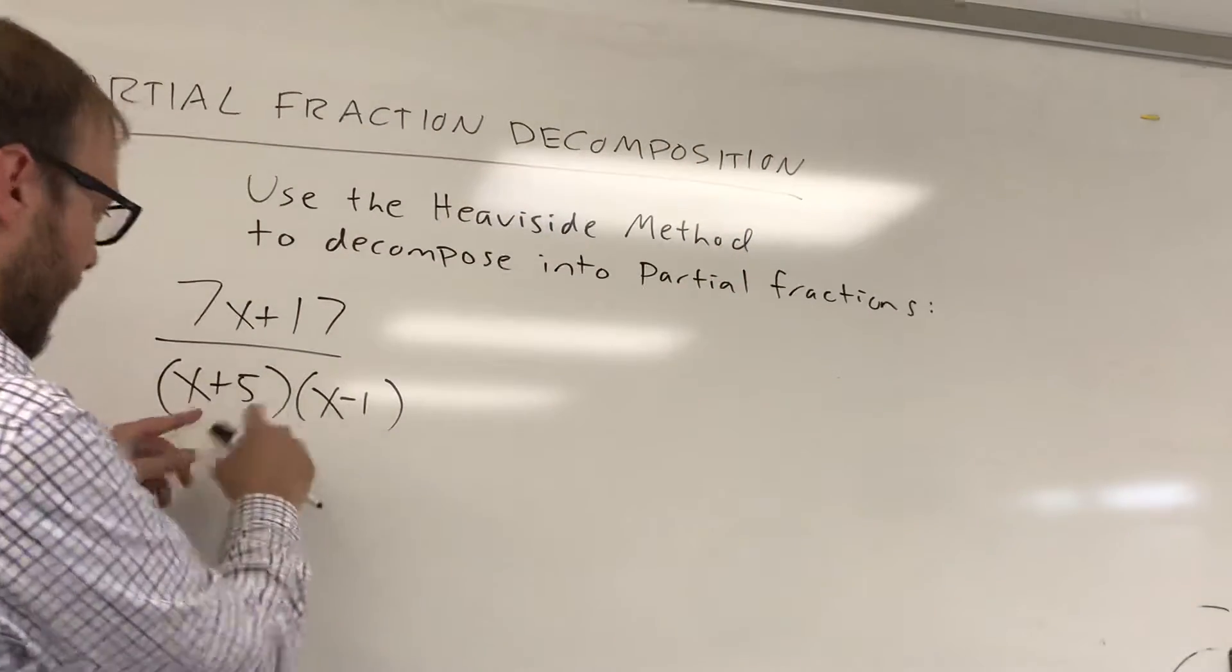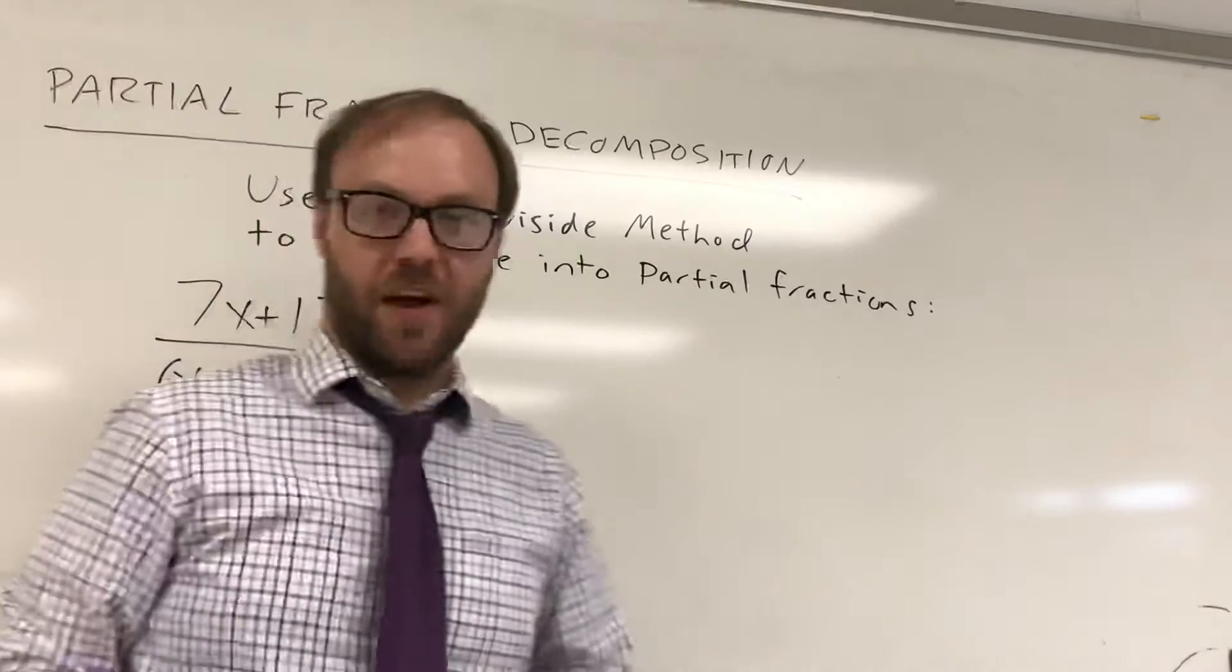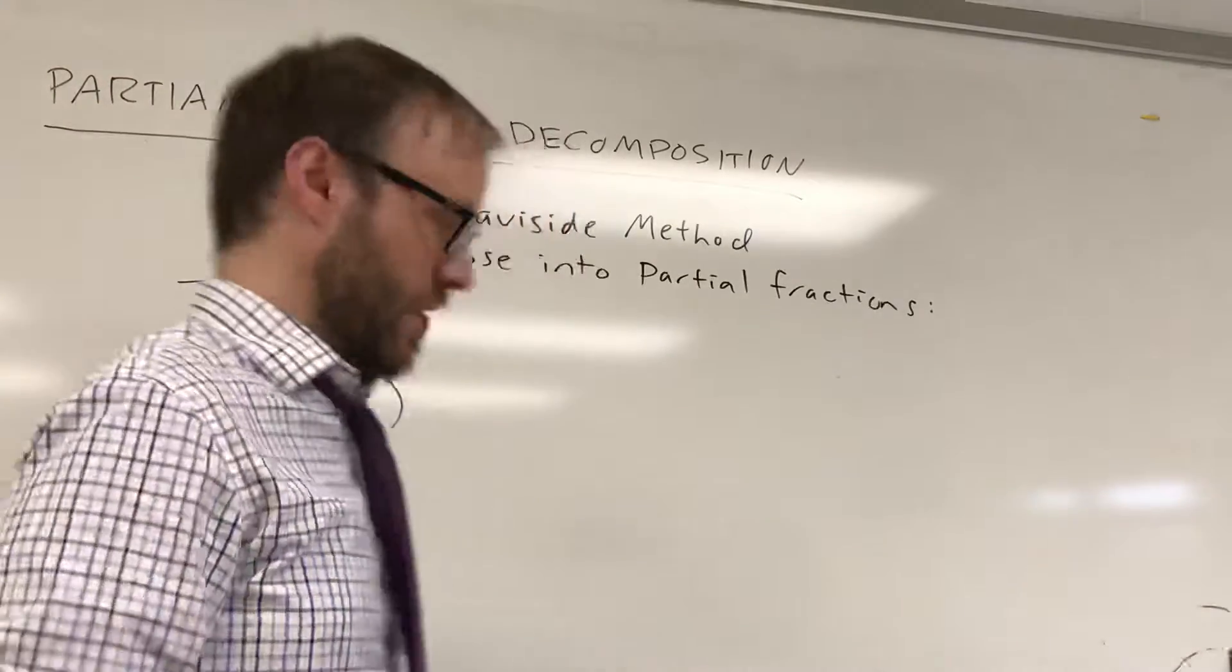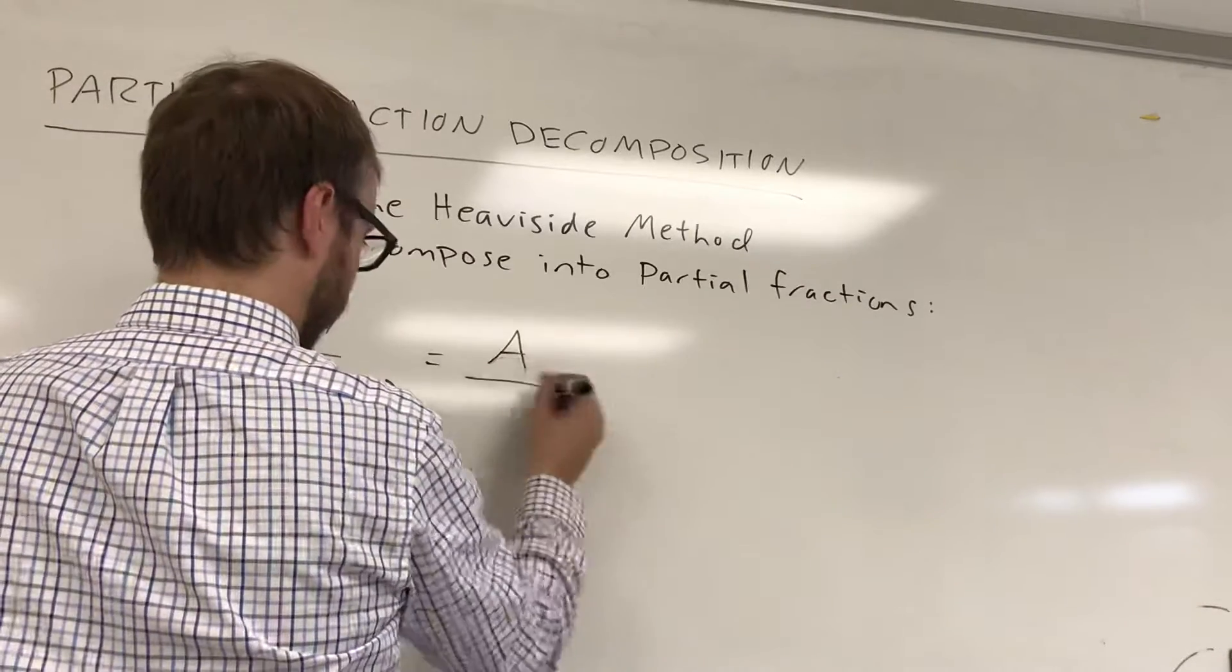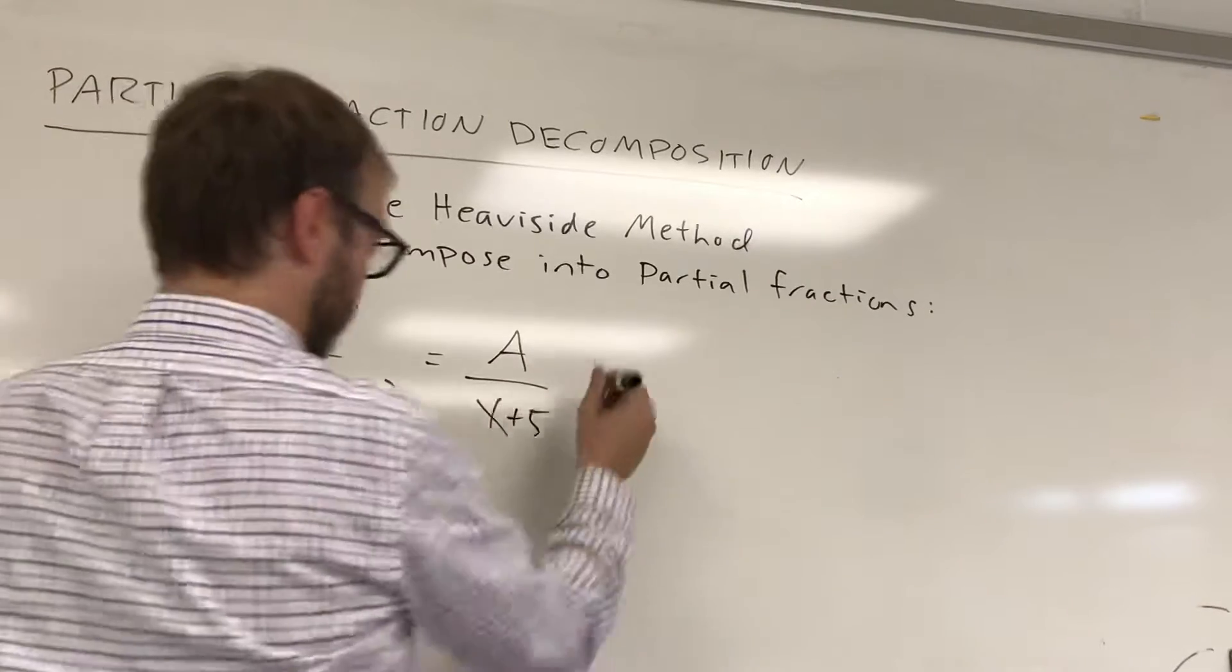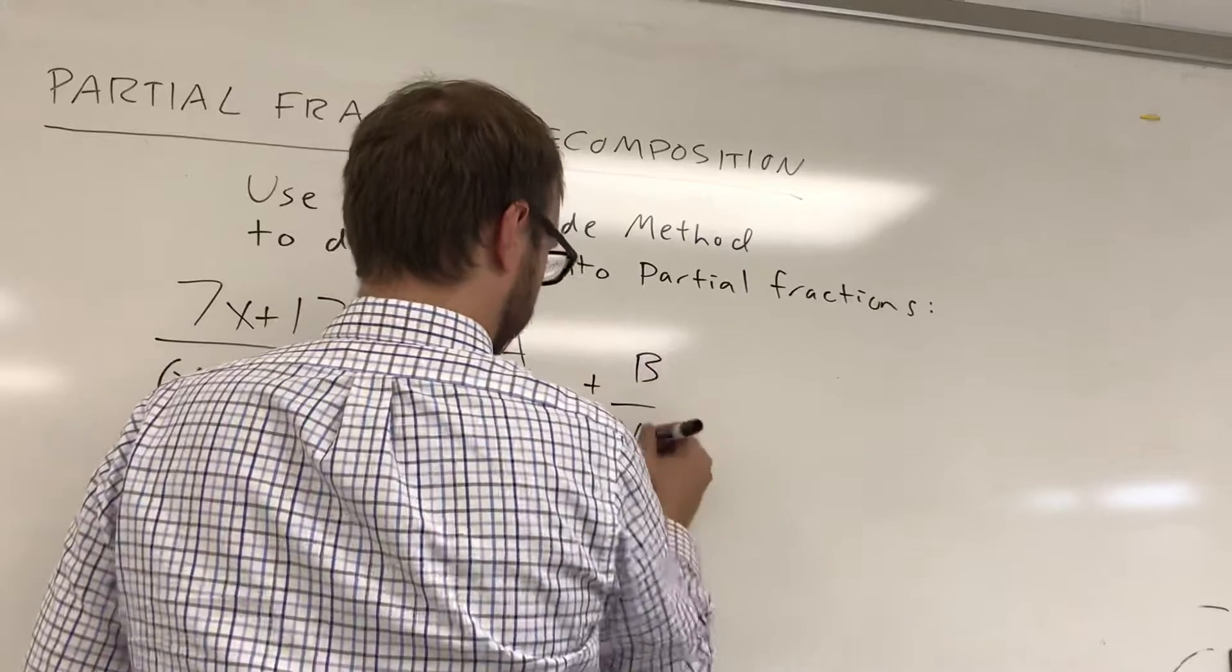So you factor your denominator, breaks up into parts. By the way, this is an example I already did, so I just want to show you, you get the same result. So Heaviside would have said, okay, we're going to write this as A over x plus 5 plus B over x minus 1.